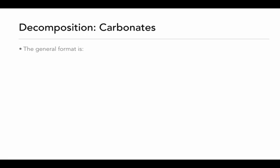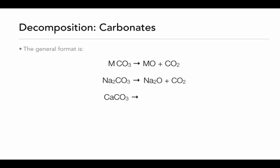The decomposition of carbonates involves compounds that have the carbonate ion. The general pattern is that a metal carbonate will decompose into a metal oxide and carbon dioxide. Sodium carbonate decomposes into sodium oxide and carbon dioxide. Calcium carbonate similarly produces calcium oxide and carbon dioxide. Aluminum carbonate produces aluminum oxide and carbon dioxide — in this case the predicted products are not balanced, so we need to put a 3 in front of the carbon dioxide. If you have a metal carbonate, the decomposition gives you a metal oxide and carbon dioxide; make sure the metal oxide formula is correct and then balance the entire equation.